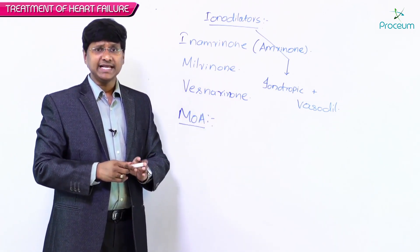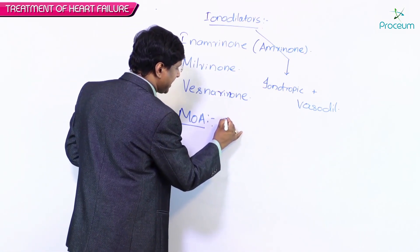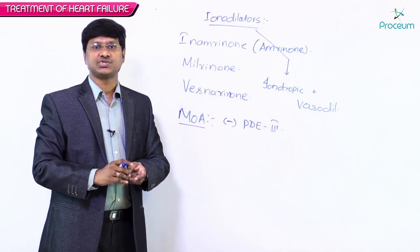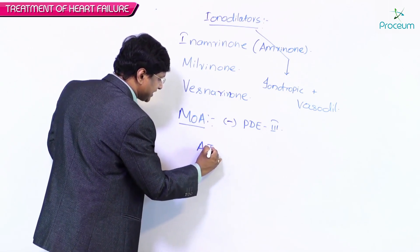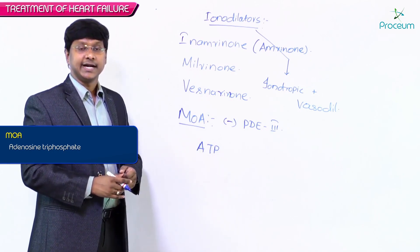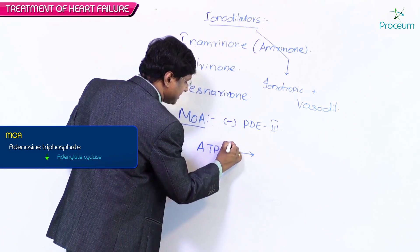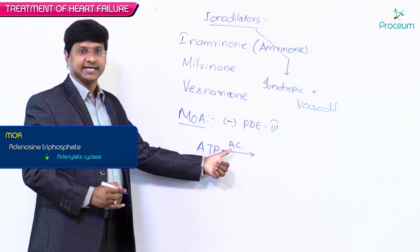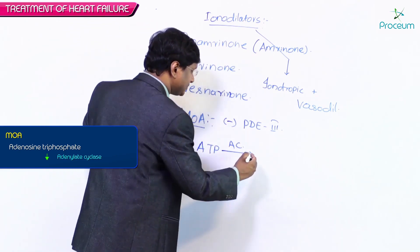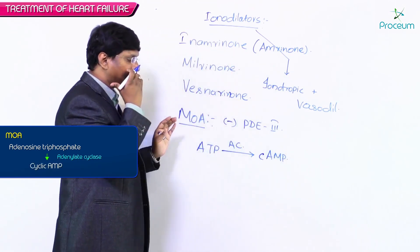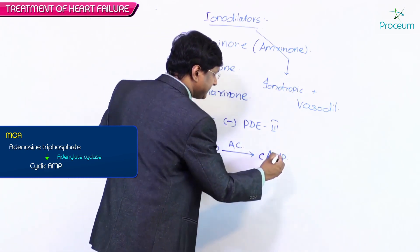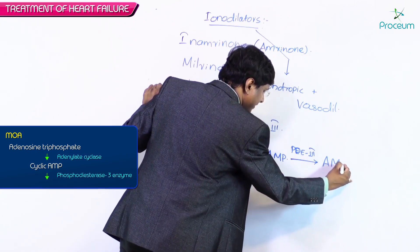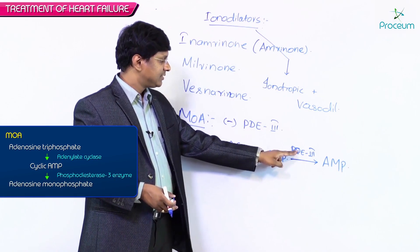These drugs inhibit an enzyme called phosphodiesterase-3. Adenosine triphosphate (ATP), in the presence of the enzyme adenylate cyclase, is converted into cyclic AMP. This cyclic AMP, in the presence of phosphodiesterase-3, is normally converted into adenosine monophosphate (AMP).